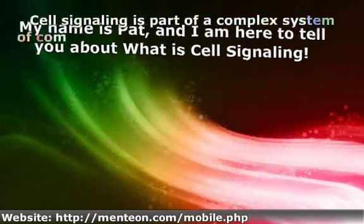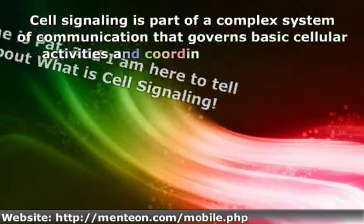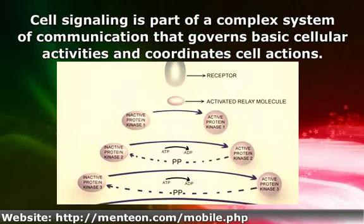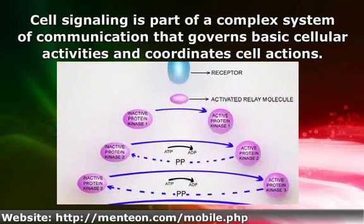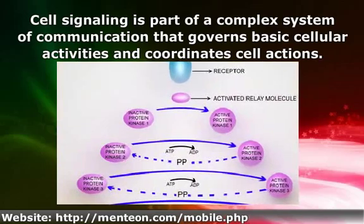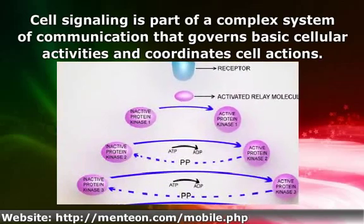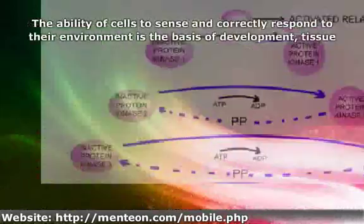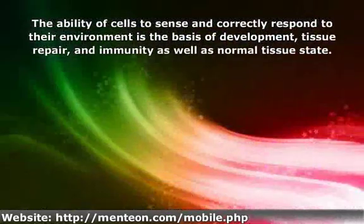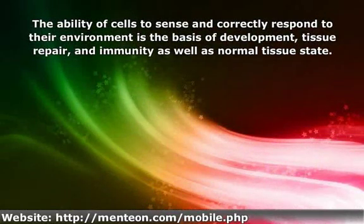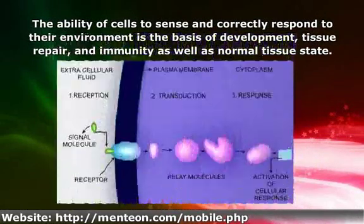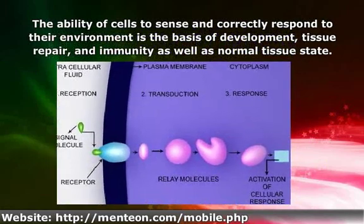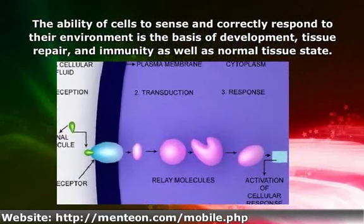Cell signaling is part of a complex system of communication that governs basic cellular activities and coordinates cell actions. The ability of cells to sense and correctly respond to their environment is the basis of development, tissue repair, and immunity as well as normal tissue homeostasis.